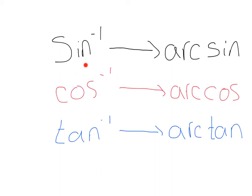First up is that an inverse can also be written as arc. For example, sine inverse is the same as arc sine. Cosine inverse is the same as arc cosine. Tangent inverse is the same as arctangent. Whenever you see this negative 1 or an arc, it means the same exact thing.